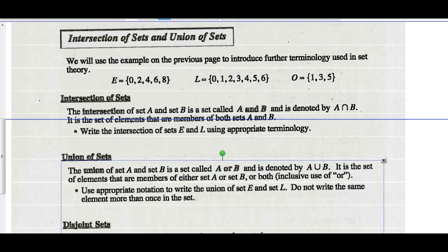The intersection of sets. The intersection of set A and set B is called A and B — the A and B intersection. It's denoted by the notation A intersect B.